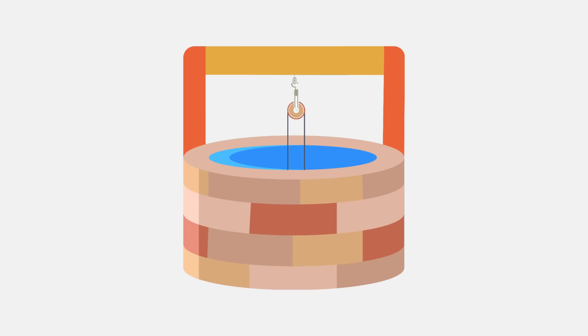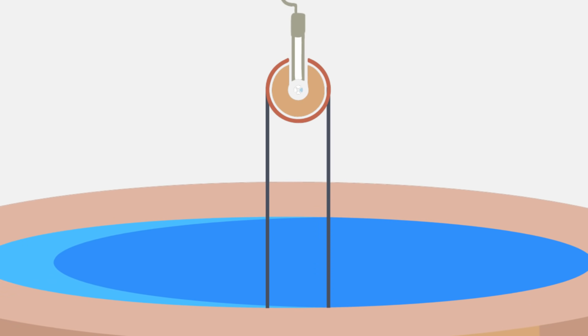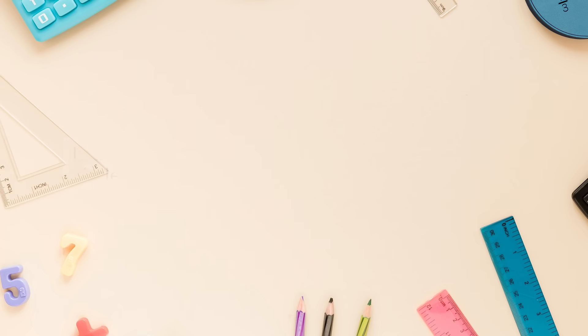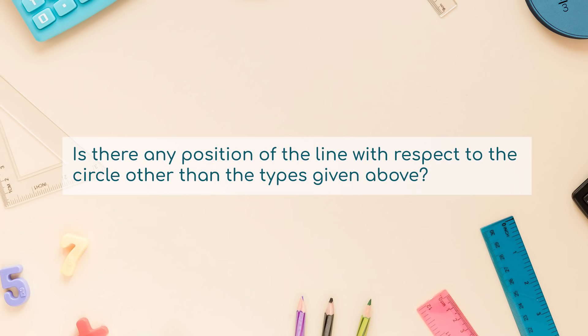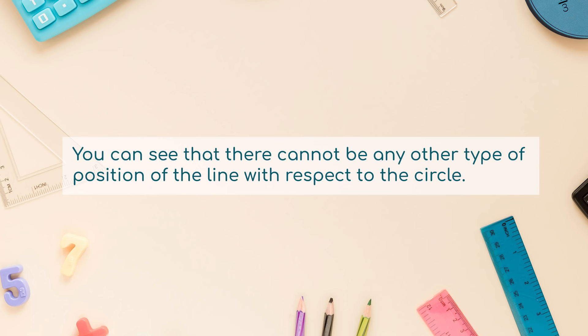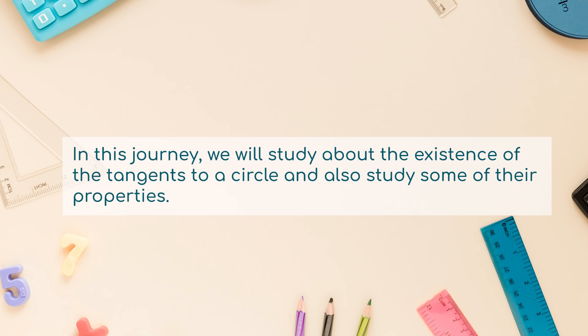You might have seen a pulley fitted over a well which is used in taking out water from the well. Look at figure 10.2. Here the rope on both sides of the pulley, if considered as a ray, is like a tangent to the circle representing the pulley. Is there any position of the line with respect to the circle other than the types given above? You can see that there cannot be any other type of position of the line with respect to the circle. In this journey, we will study about the existence of the tangents to a circle and also study some of their properties.